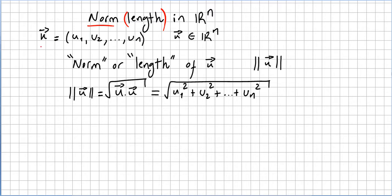So we have a vector u with components u1, u2, etcetera, till un. This u is a vector in a vector space Rn. We call this the norm or length of the vector u and we write it this way.